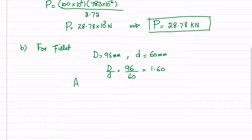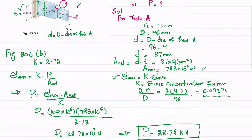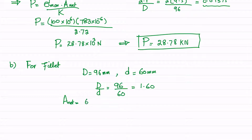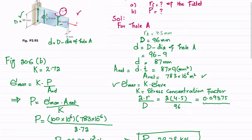The net area for the fillet portion equals the width 60 millimeters times the thickness 9 millimeters, giving 540 millimeters squared, or 540 times 10 to the power of minus 6 square meters. The maximum stress equals K_fillet times P divided by A_minimum, where A_minimum is this net area.